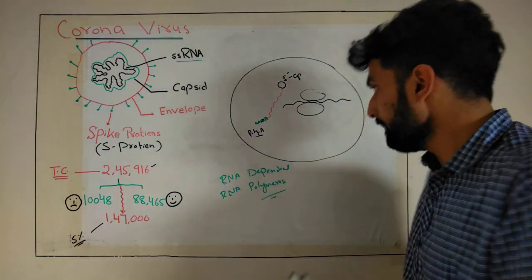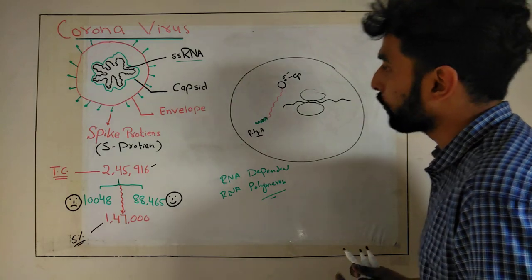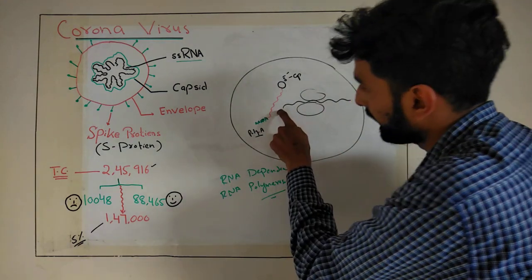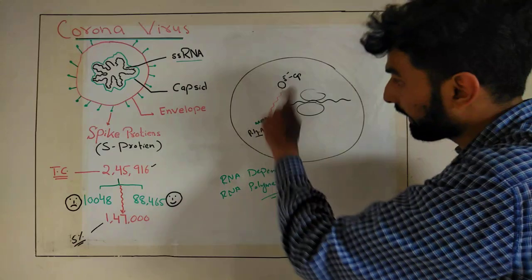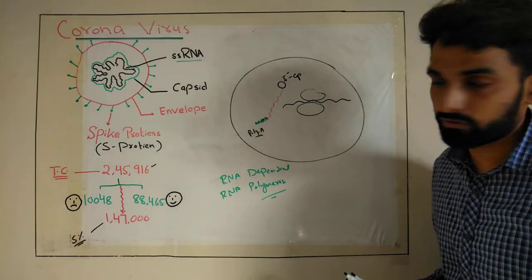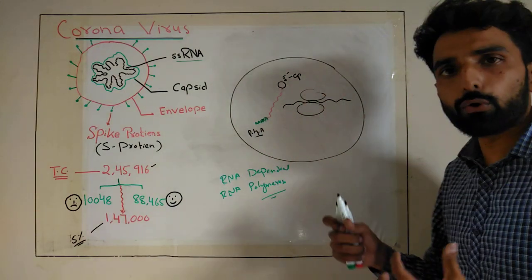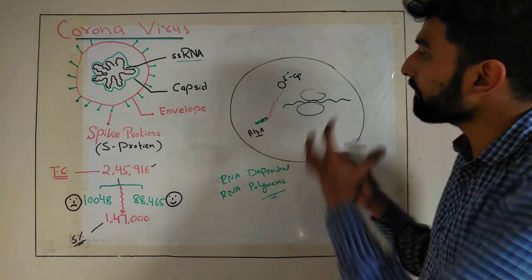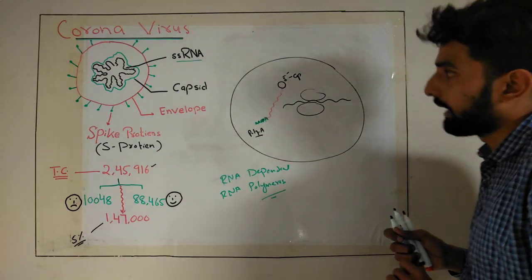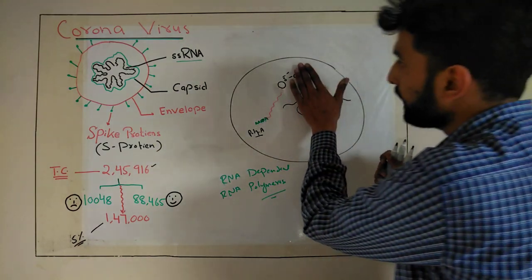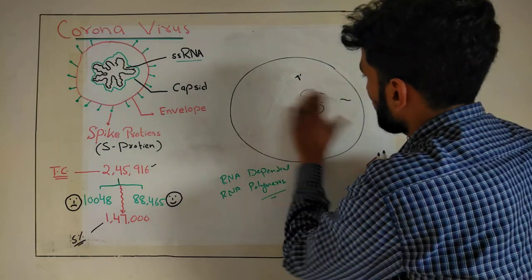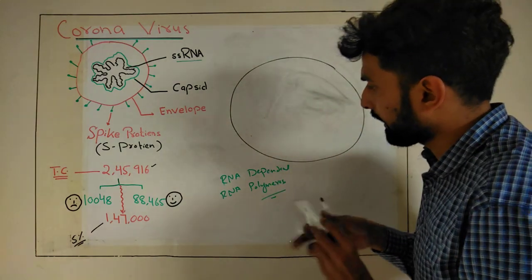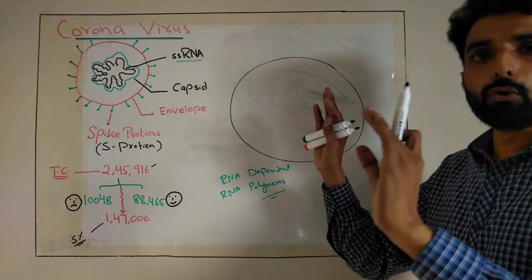RNA-dependent RNA polymerase is basically an enzyme that is going to replicate the viral RNA present in our host cell. It will produce a large number of copies of this viral RNA. So once RNA-dependent RNA polymerase has been produced by the process of translation,